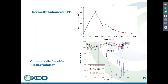When you look at the research on 1,4-Dioxane and biological processes, people have discovered bacteria that will use 1,4-Dioxane as a primary food source. Unfortunately, these bacteria are difficult to grow and quite finicky. A more robust biological approach is a co-metabolic process in the presence of oxygen.